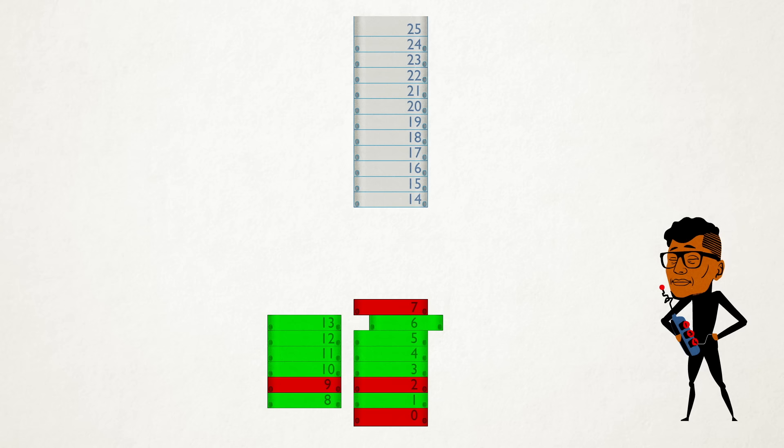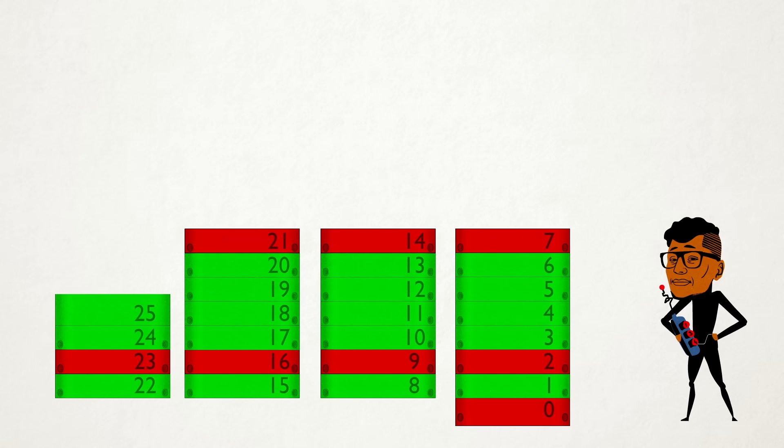13 will match 6. 14 will match 7. And so on. In particular, the losing levels will always be multiples of 7 and 2 greater than multiples of 7.